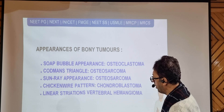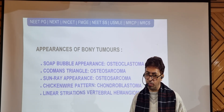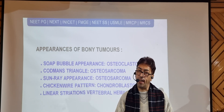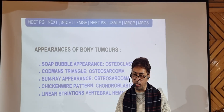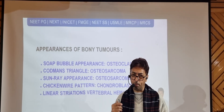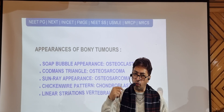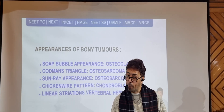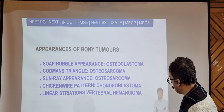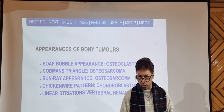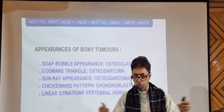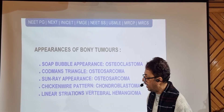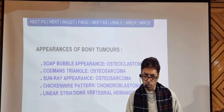Codman's triangle is a periosteal reaction seen in osteosarcoma. In this condition there is hyperproliferation where bone growth increases as a result of a tumor, giving a triangular appearance at the terminal ends of long bones. This is distinct from osteoclastoma — you have to remember the difference between osteoclastoma and osteosarcoma. Associated with Codman's triangle, there are spicules of bone that give a radiating appearance like rays of the sun. This classic combination of Codman's triangle and sunray appearance is characteristic of osteosarcoma.